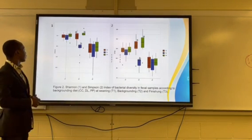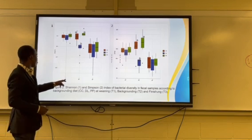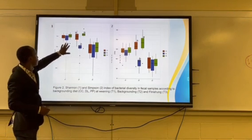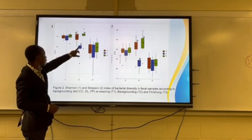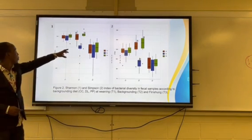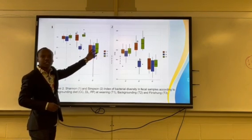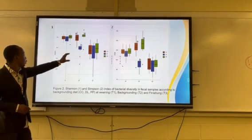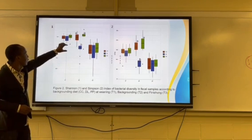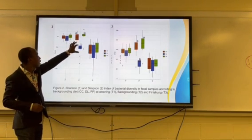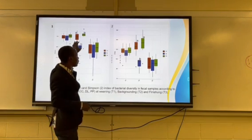This shows the alpha diversity for the microbial population. At timeline 1, which is weaning, there was no significant difference, but at timeline 2 there was a significant difference, with drylot having the least bacteria population. At finishing there was no significant difference in the microbial population. This shows that microbial population in ruminant animals is very important in determining their performance.